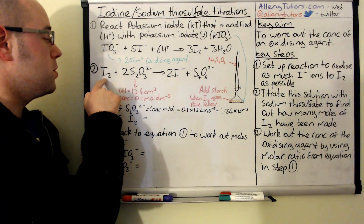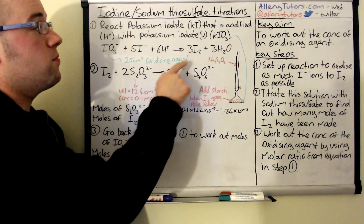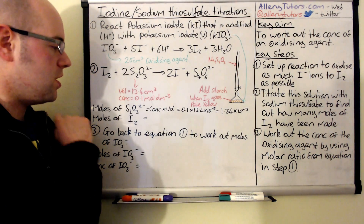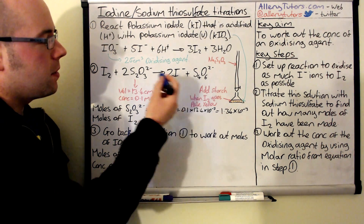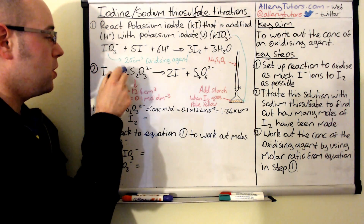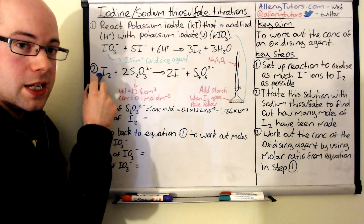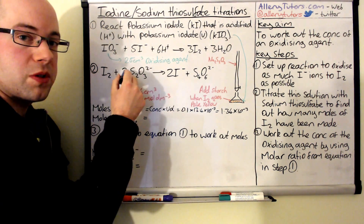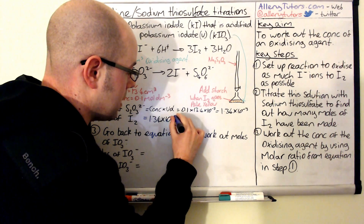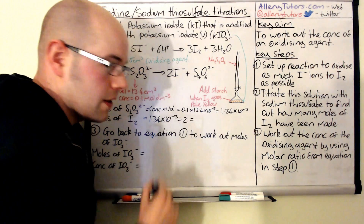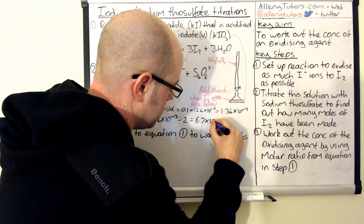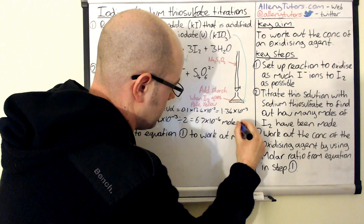Now we can work out the number of moles of iodine. We need to use the molar ratio from the thiosulfate–iodine equation, which is a 2:1 ratio — two moles of thiosulfate for every one mole of I₂. So we take 1.34 × 10⁻³ and divide by 2, giving us 6.7 × 10⁻⁴ moles of iodine.